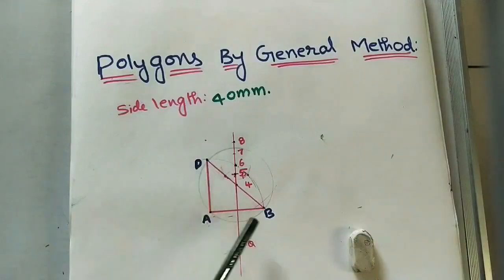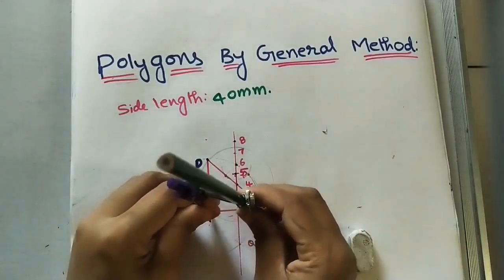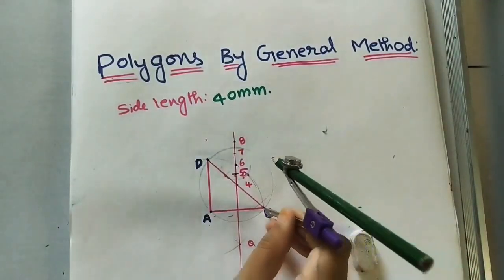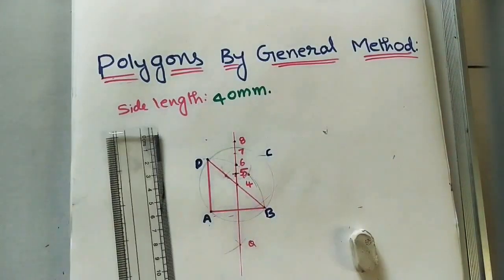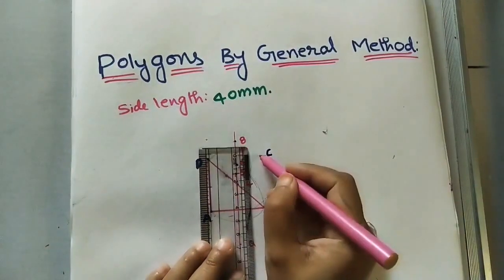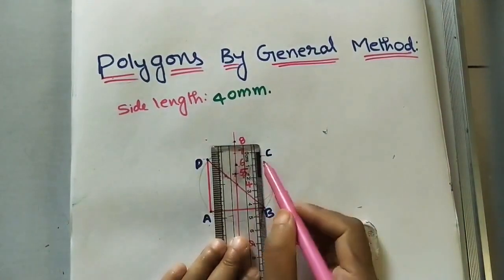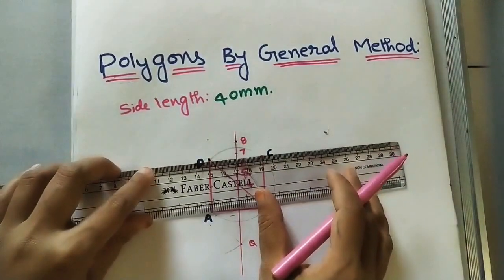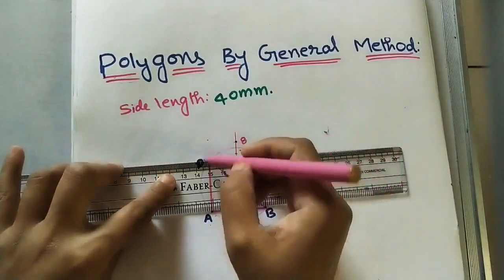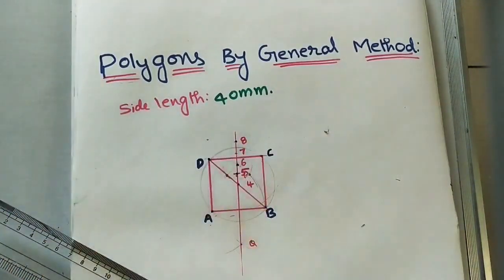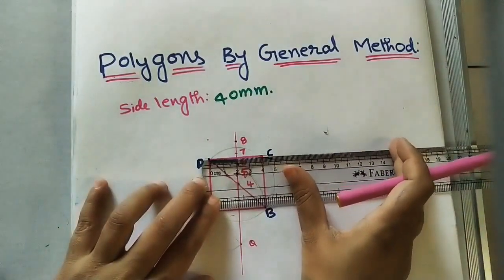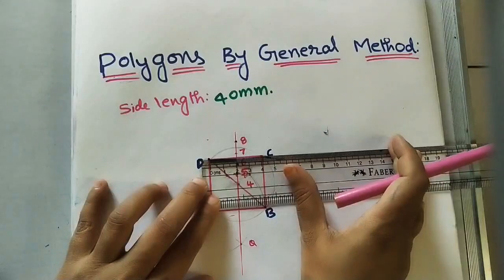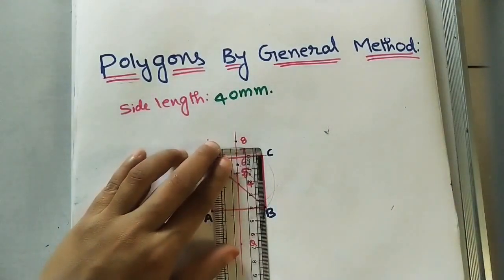We already have two adjacent lines. We now need to mark point C. Since the side length is four centimeters and we already have point 4, use the compass to draw an arc — that intersection point is C. Join B to C and C to D. So ABCD is a square. Check that all lengths equal four centimeters.